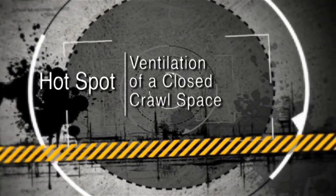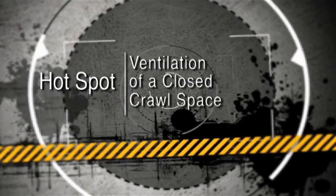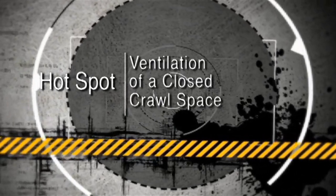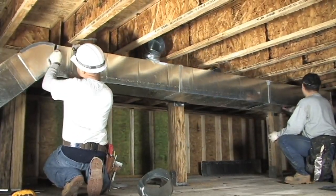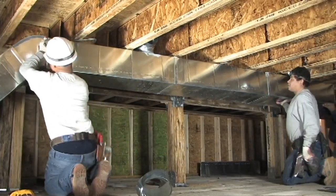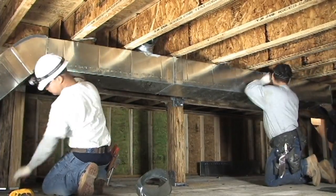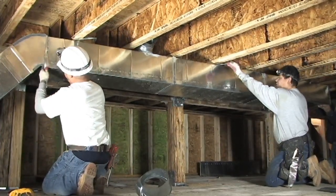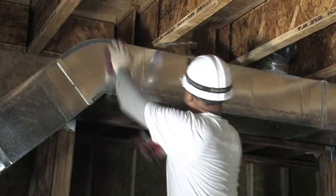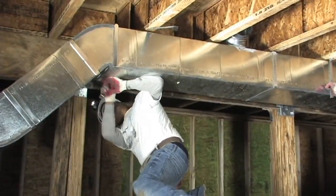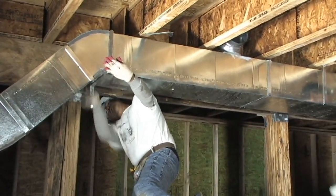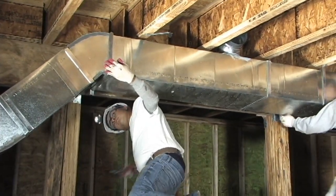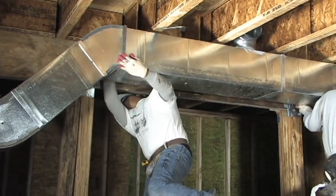Ventilation of a Closed Crawl Space. The International Residential Code requires mechanical ventilation using a conditioned air supply approach or a continuous mechanical exhaust approach. Both approaches require a ventilation rate of one cubic foot per minute for each 50 square feet of closed crawl space floor area, and an air pathway — such as a transfer grill or duct — connecting the crawl space and the house.